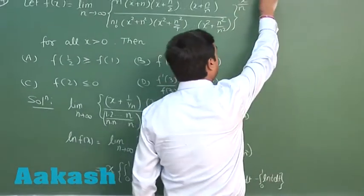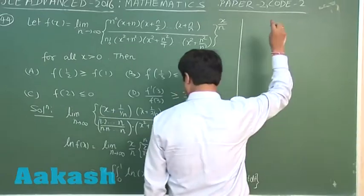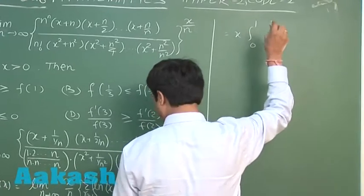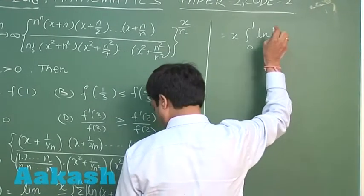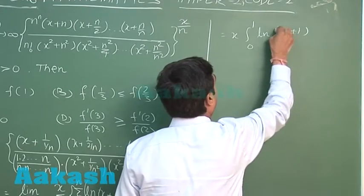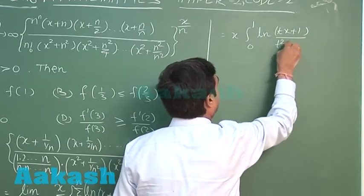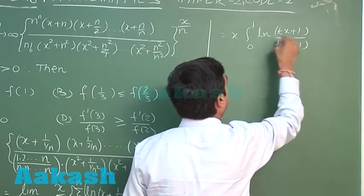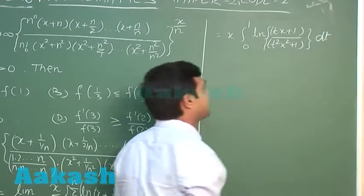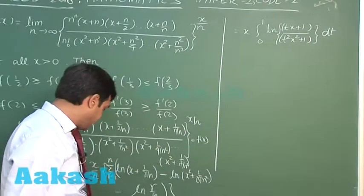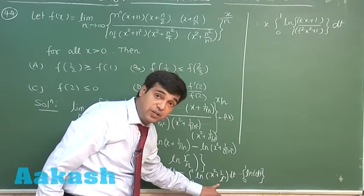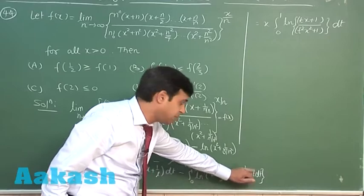Combining using the log property, we write: log f(x) = x · ∫₀¹ log[(tx + 1) / (t²x² + 1)] dt. The term t is automatically cancelled out. So we have: log f(x) = x · ∫₀¹ log[(tx + 1) / (t²x² + 1)] dt.